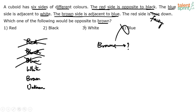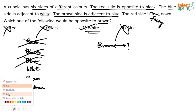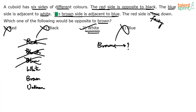Which one of the following would be opposite to brown? From the options, red, black, and blue are eliminated. Red is eliminated, black is eliminated, and blue is also eliminated. So the only option left is option three — white. So option three, white is the answer. All those who were confused between white and blue should understand that the key was the statement that the brown side is adjacent to blue. If brown is adjacent to blue, how can blue be opposite to brown? Blue cannot be opposite to brown. So that's clearly eliminated. Option three, white is the answer.